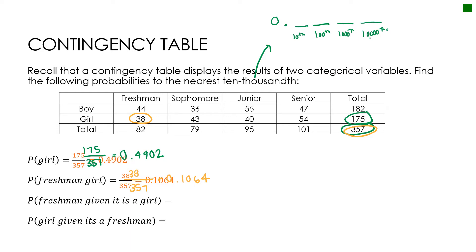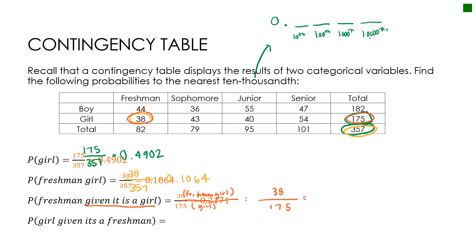The next one is probability of freshman given it's a girl. The 'given' means my denominator is girls. So my numerator is going to be the probability that it's a freshman girl, and the denominator is the probability that it's a girl. The top is the intersection — both — and the bottom is whatever the given condition is. Using a calculator to divide, I get 0.2171.